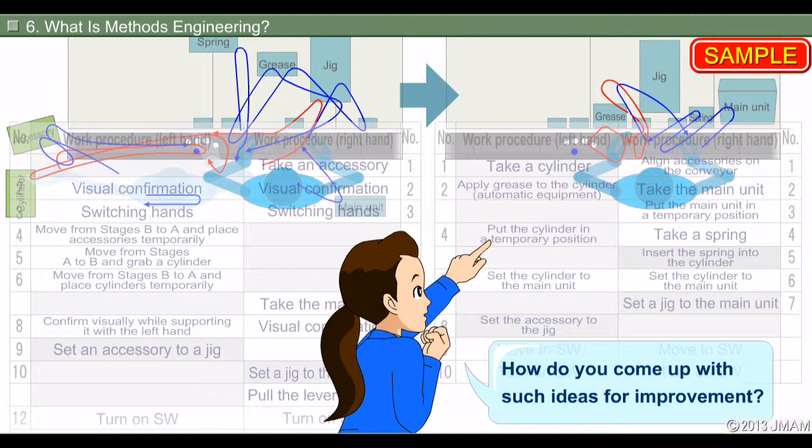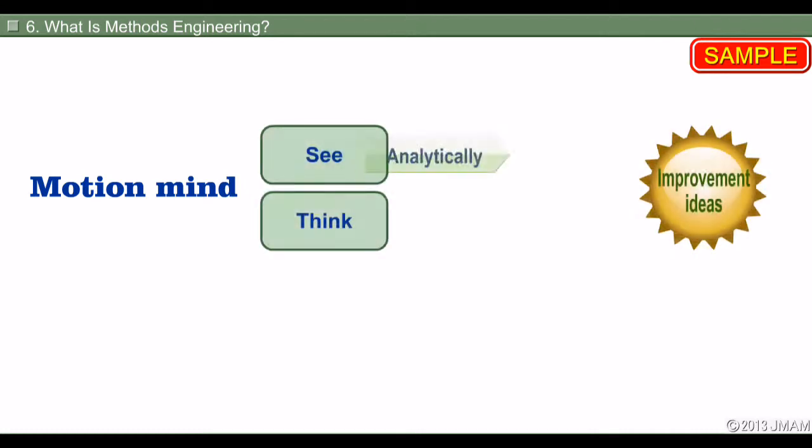You may be wondering how we came up with these ideas for improvement. The attitude known as motion mind is important. While improving the current status, it is always necessary to see and think analytically and logically.